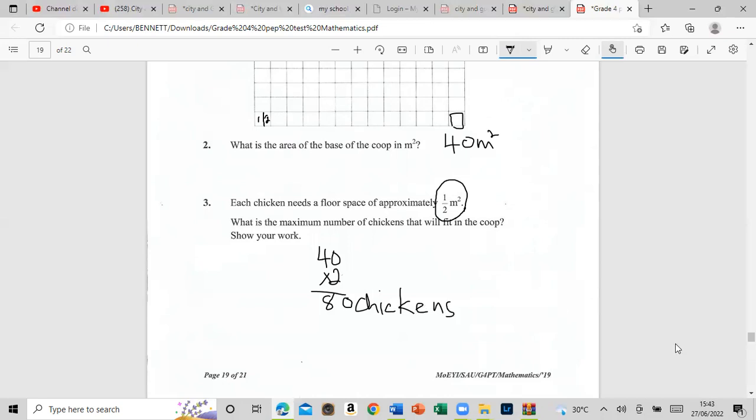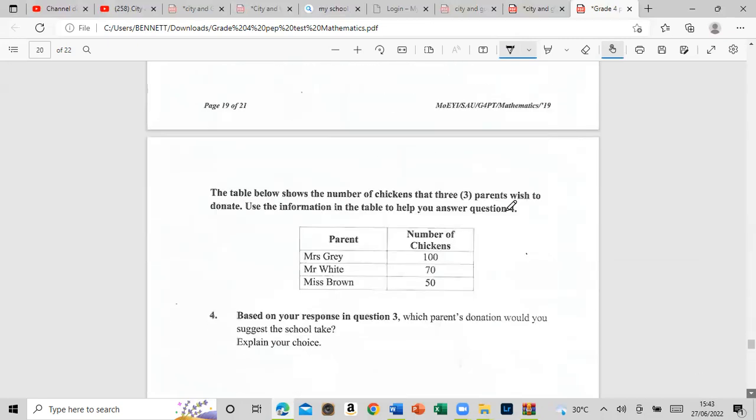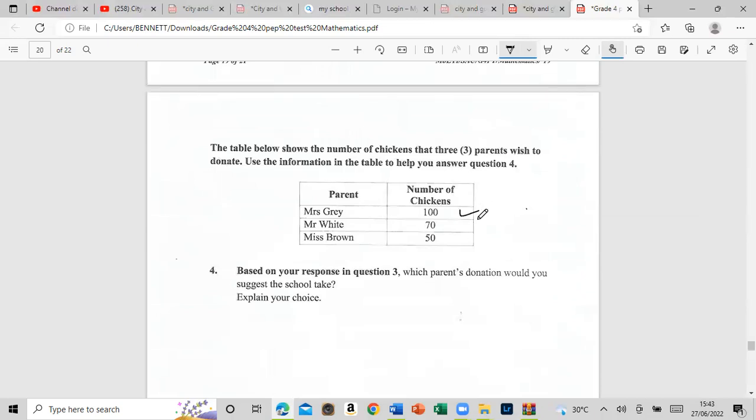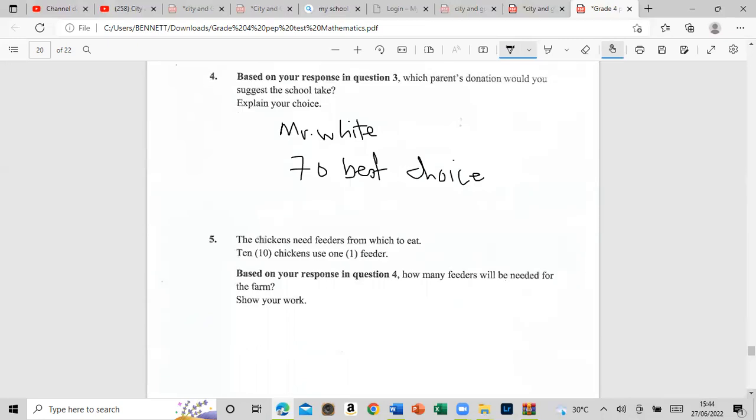Let's go back to question three. We decided that it can hold 80 chickens. If Mrs. Gray offers 100, I would not take the 100 because we won't have space to put 20 of the chickens. I would take Mr. White's 70 because 70 is close to 80. You can hold 70 and have a little more space. I would not take the 50 because I will be losing 20 when I can get 20 more. So I will choose Mr. White. The reason: 70 is the best choice.